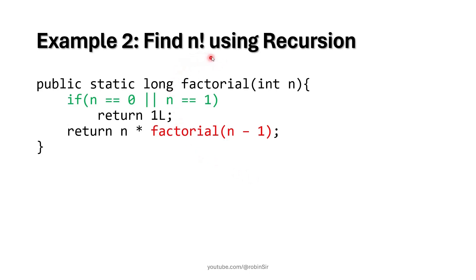Next is finding the factorial of n using recursion. The function name is 'factorial', the return type is long, and it takes one integer argument. If n is 0 or 1, the result should be 1, so we return 1 — the suffix 'l' is given to return as a long data type. These conditions highlighted in green are the base cases. Otherwise we go to the recursive case: factorial of n is n into factorial of n minus 1, highlighted in red.